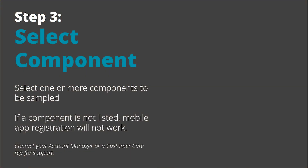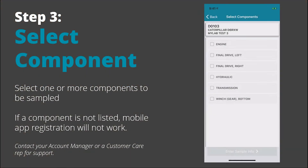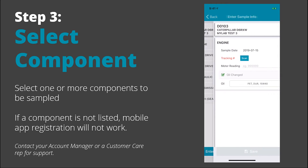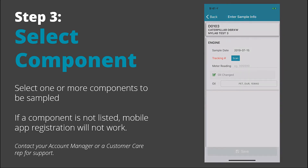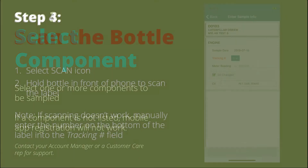Step three is to select the component, or components, that you are sampling. If a component is not listed, the mobile app registration will not work, so contact your account manager or customer care rep for support.